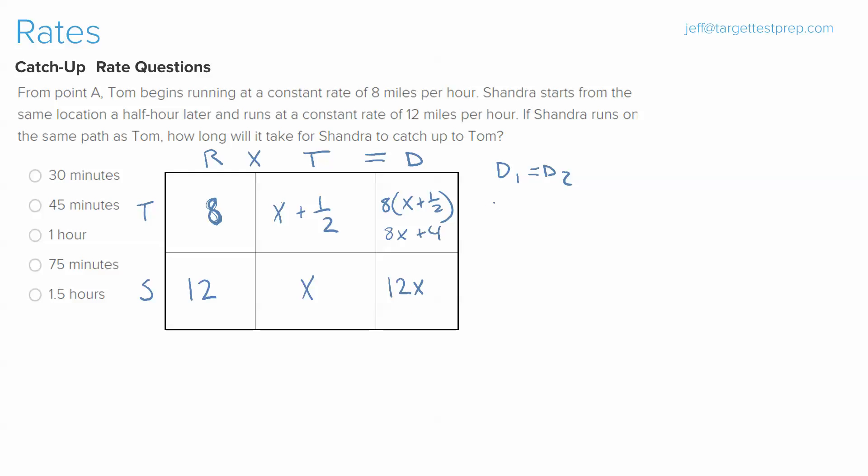Now we can say 8x plus 4 equals 12x. Why are we doing this? Well, at the beginning I mentioned that distance 1 equals distance 2 in these types of problems. Since Tom's distance is 8x plus 4 and Sandra's distance is 12x, those are our two distances.